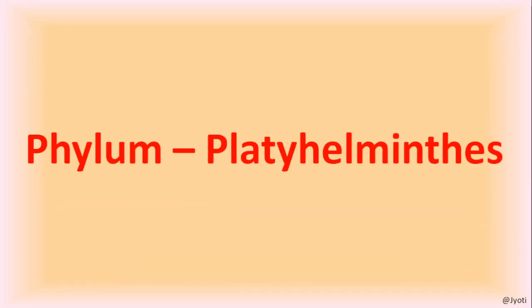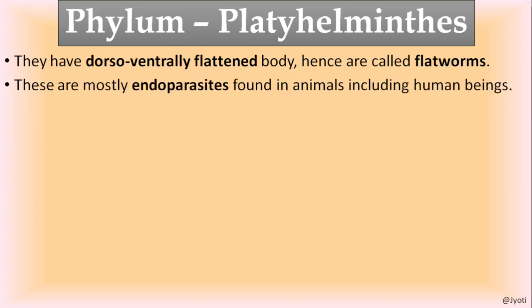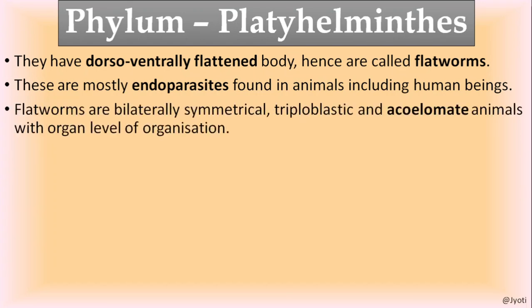Let us start our discussion with Phylum Platyhelminthes and discuss its characteristics. The name Platyhelminthes comes from 'platy' meaning flat and 'helminthes' meaning worm, so this phylum includes all the flat worms. These flat worms have a dorsoventrally flattened body, and these organisms are mostly endoparasites — they live inside the body of the host, including human beings.